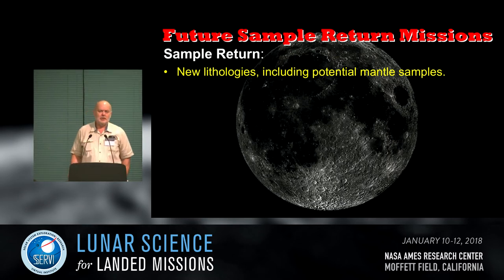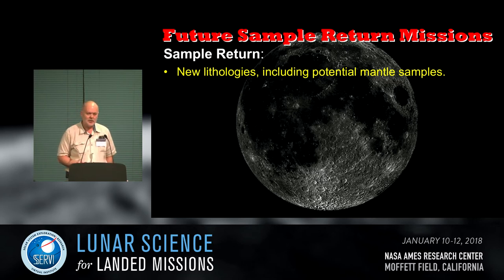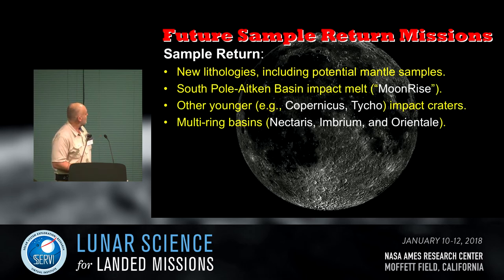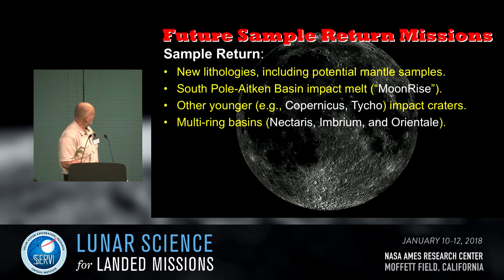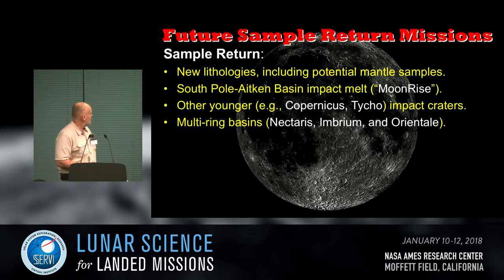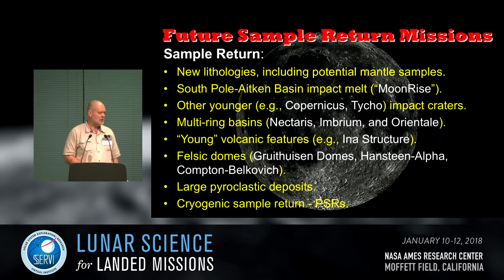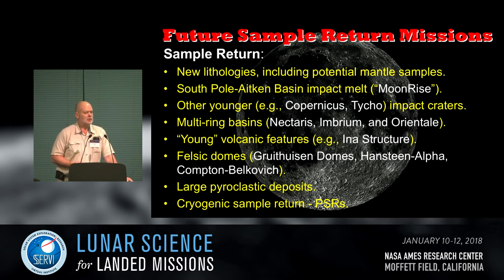Sample return is very important as well as in situ science. Focusing on sample return: we've got new lithologies including potential mantle samples, the South Pole-Aitken Basin impact melt, younger craters to constrain the younger end of the crater count curve, multi-ring basins to look at the impact process, young volcanic features, felsic domes, large pyroclastic deposits, and cryogenic sample return or in situ science in some of the permanently shaded regions.